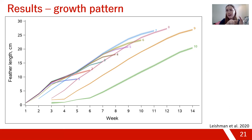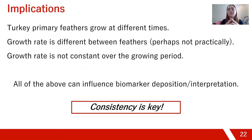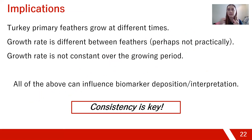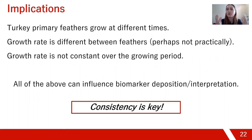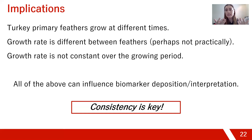The main implications of our study are that turkey primary feathers grow at different times — they don't all appear and molt off simultaneously — which is really important for both designing studies and interpreting results. If you measure a biomarker in turkey primary feather 1, we now have an idea of when that growing period is and when those biomarkers would be deposited. The growth rate does differ between feathers — statistically significant, though there is probably a biological reason for it.